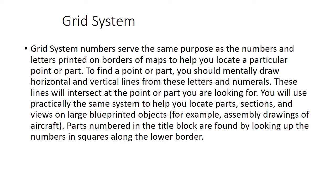Grid system numbers serve the same purpose as numbers and letters on map borders — to help locate a particular point or part. To find a point, you mentally draw horizontal and vertical lines from the letters and numerals, which intersect at the point you're looking for. This is especially useful on large blueprinted objects like aircraft assembly drawings or large civil drawings for big buildings. That's why they put in grid systems.